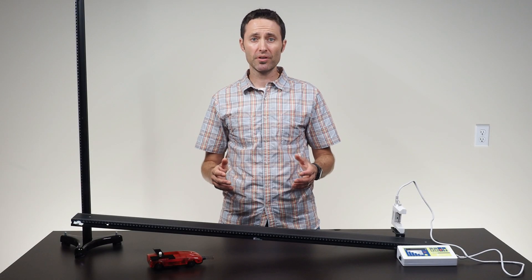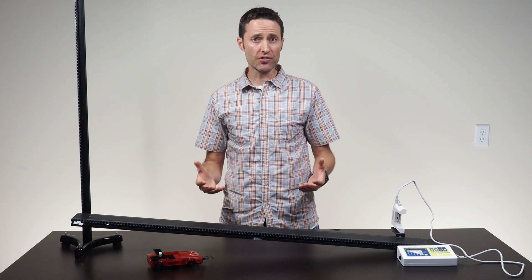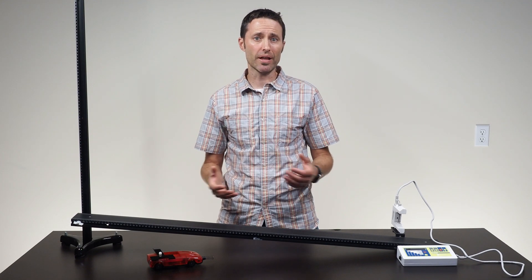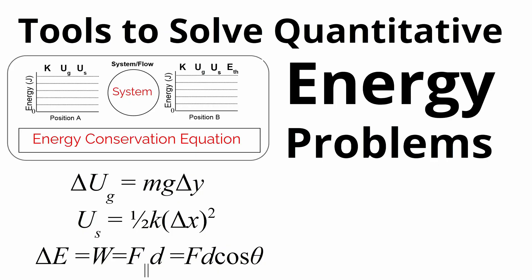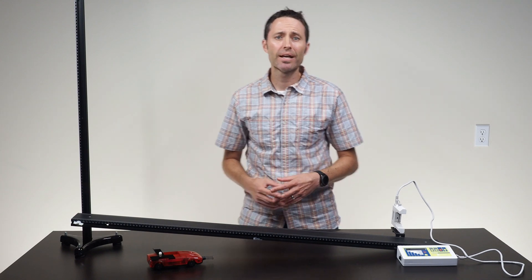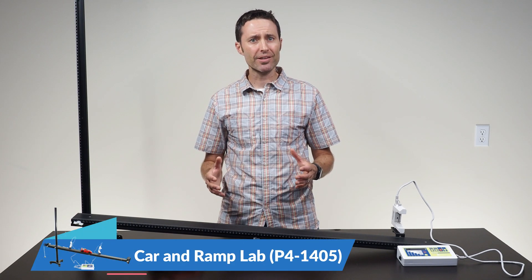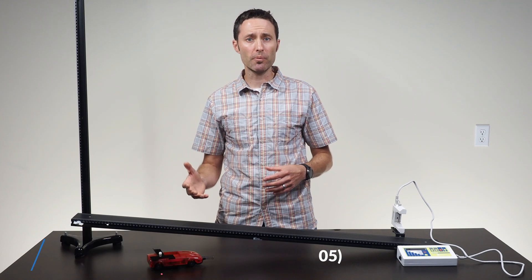At the start of the pre-lab discussion, review the basic representational tools and energy equations that have been discussed in class. Just like equations to calculate the spring potential energy and gravitational potential energy, tell students they will need an equation that allows them to calculate kinetic energy, the energy stored by moving objects. For the pre-lab discussion, you can use the car and ramp lab equipment and the timer and photogate found at Arbor Scientific.